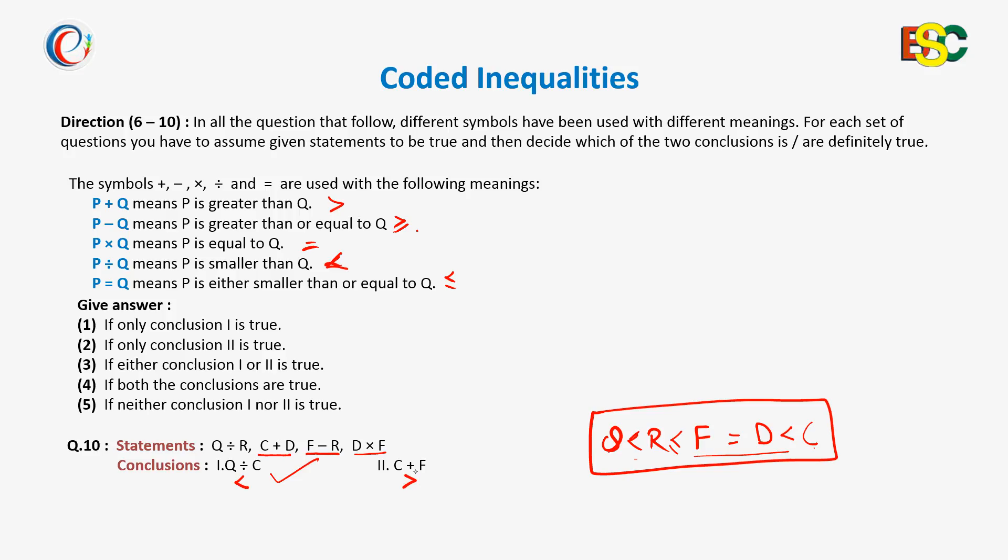And next, we have to find out if C is greater than F. Then again, we can say that C is greater than F, as F is equal to D and D is smaller than C. Definitely, C will be greater than F.